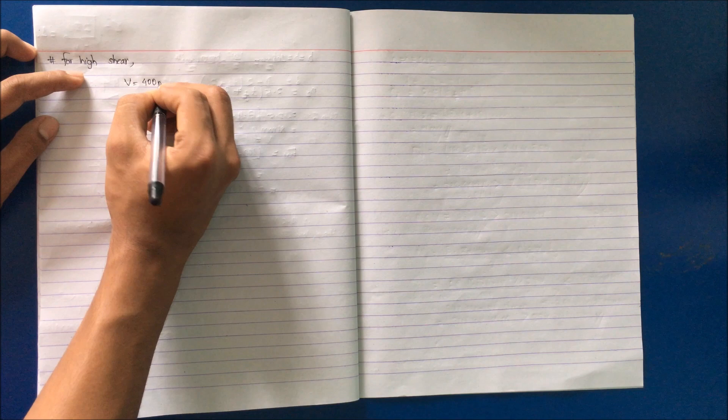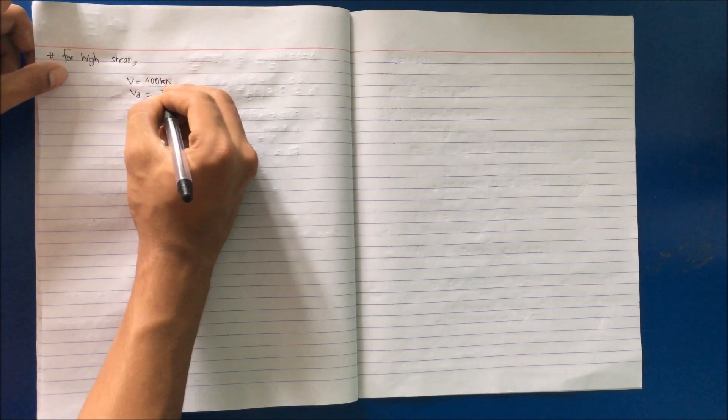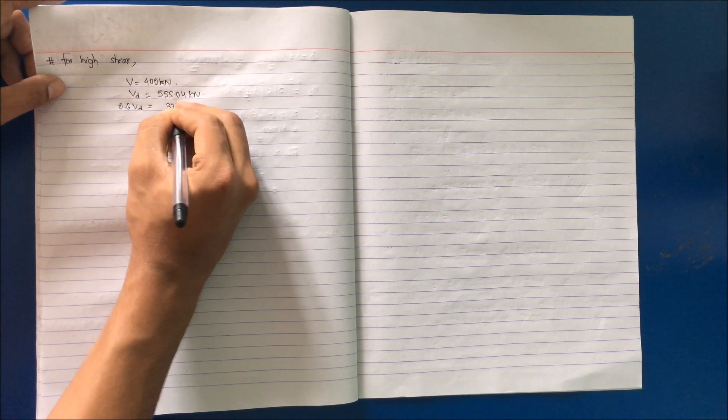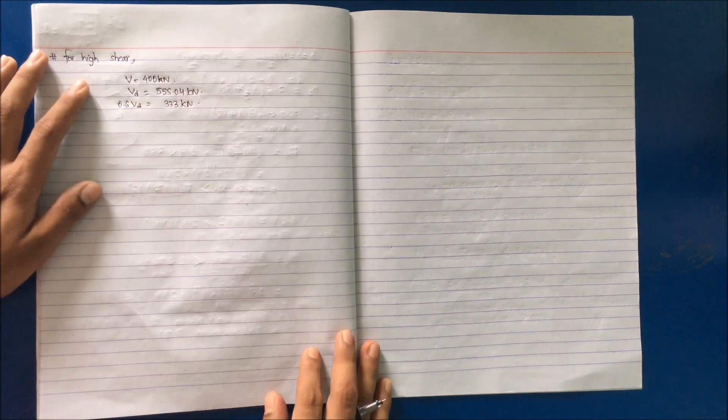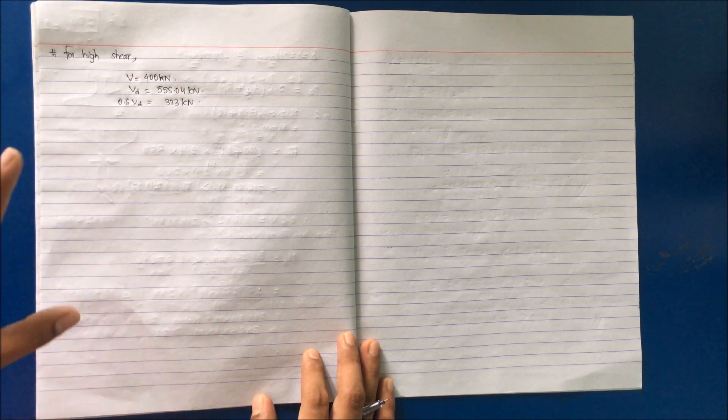For high shear, V is equal to 400 kN, Vd, that is design shear capacity, is 555.04 kN, and 0.6 Vd is equal to 333 kN. This is the condition. Now with this data you have to follow the next step with respect to page number 70.